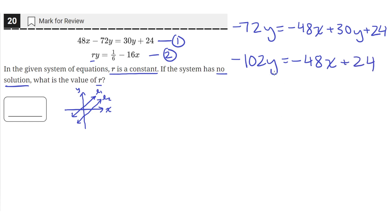And then let's get y alone. So let's divide both sides by negative 102. So on the left, we'll be left with just y. Then we'll have negative 48 over negative 102 times x, and then 24 over negative 102. Okay, so now we have the first equation in the form y equals mx plus b. m is negative 48 over negative 102, and b is 24 over negative 102.